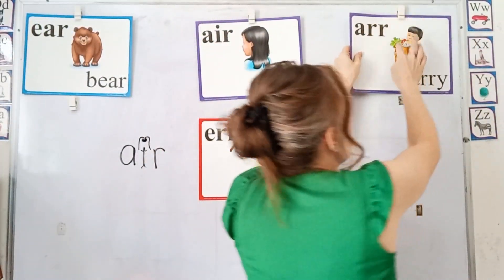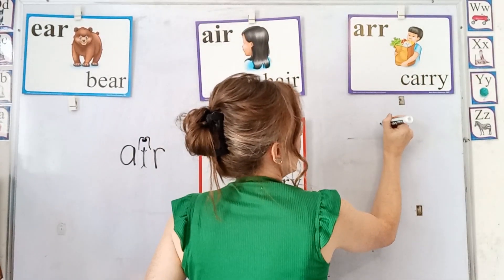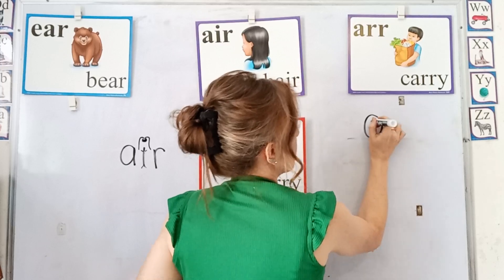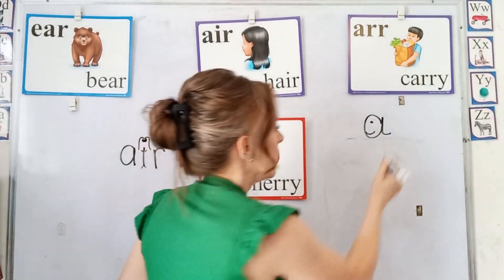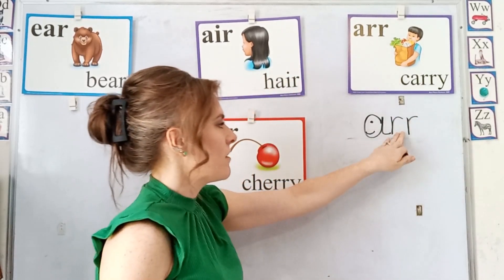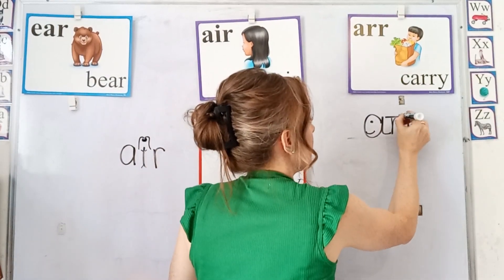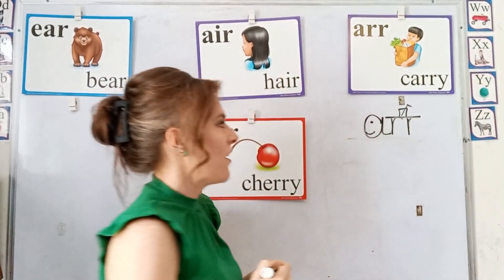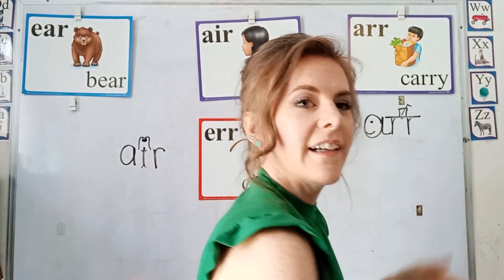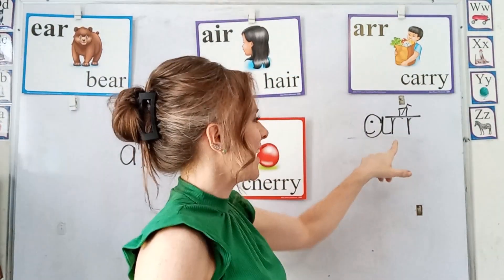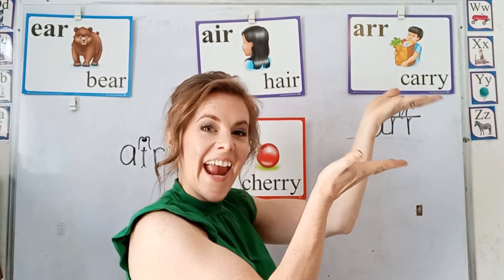A way that I like to remember this one — the 'air' in carry — you can pretend the A is a person, and the R's are little arms that are carrying something to somebody. The 'air' in carry.